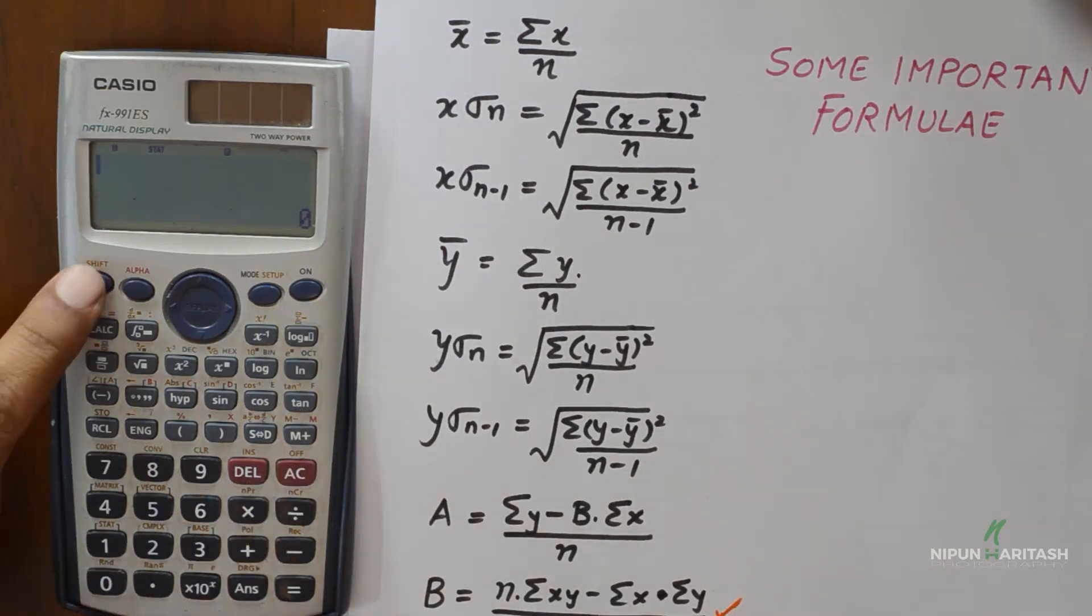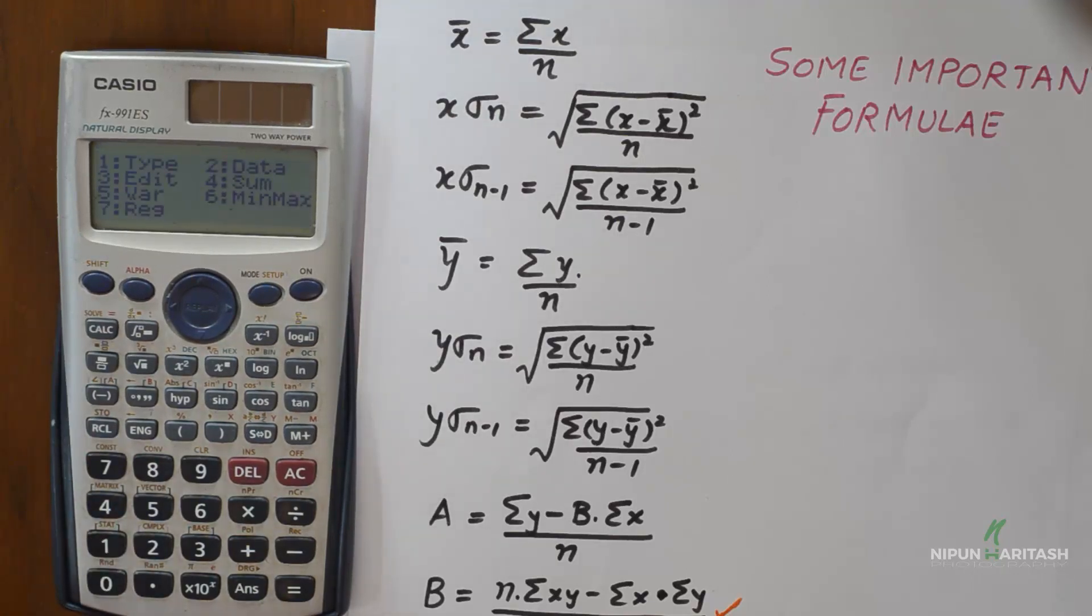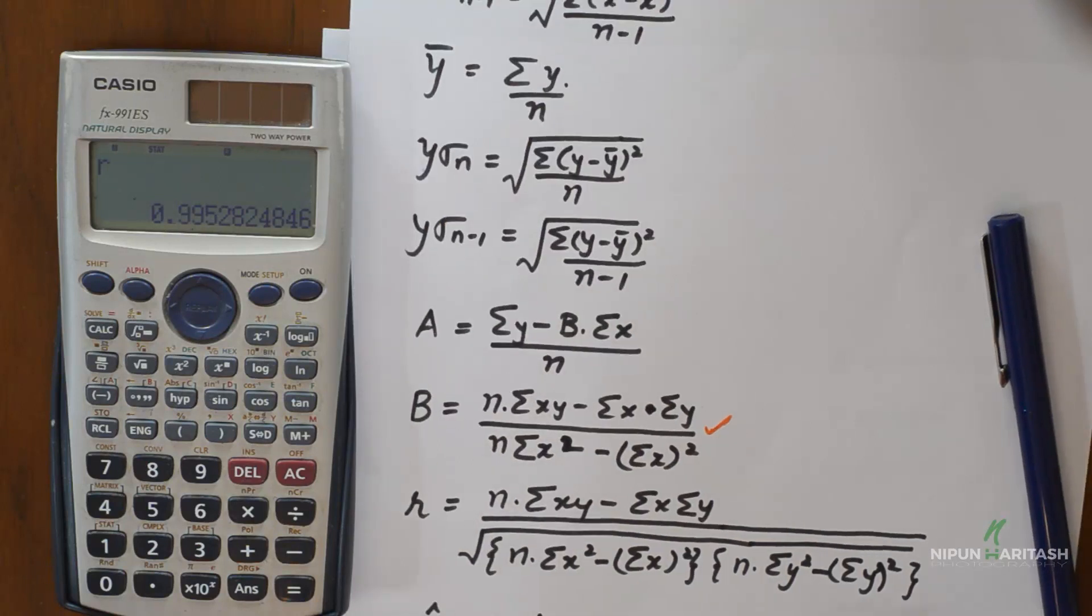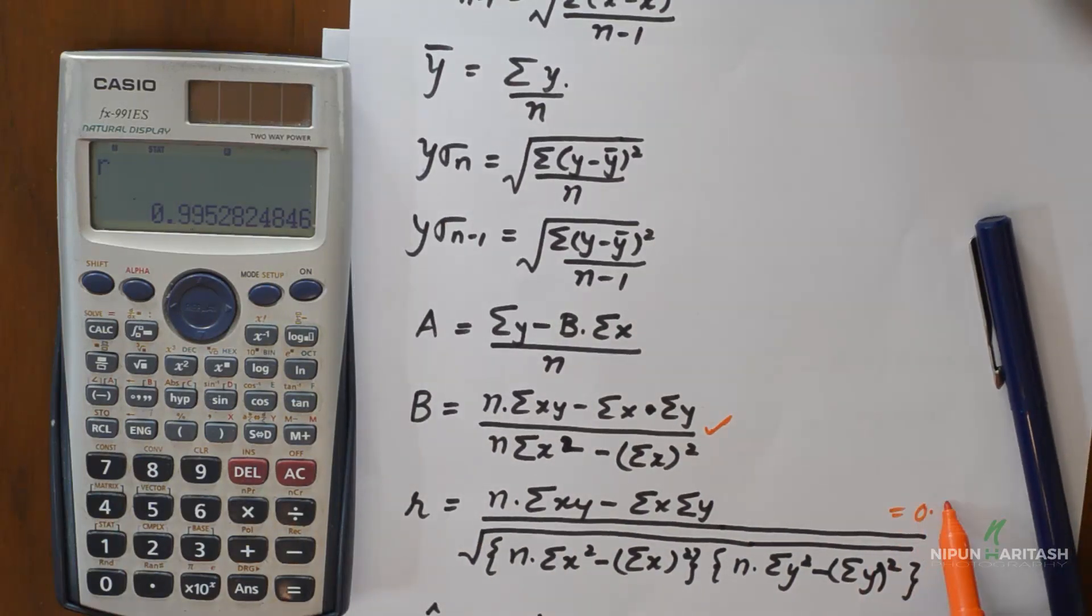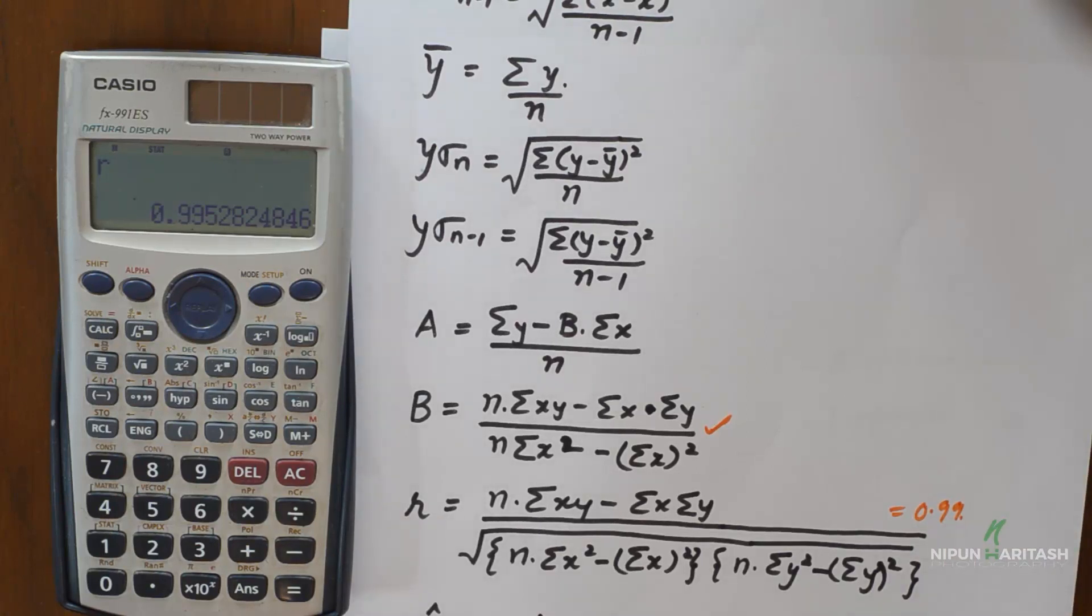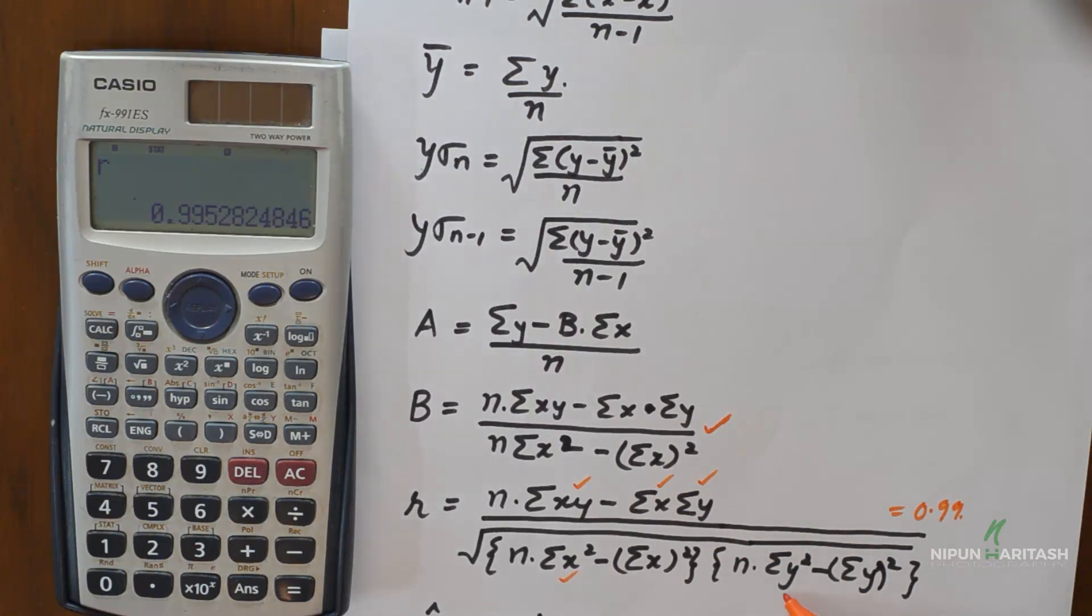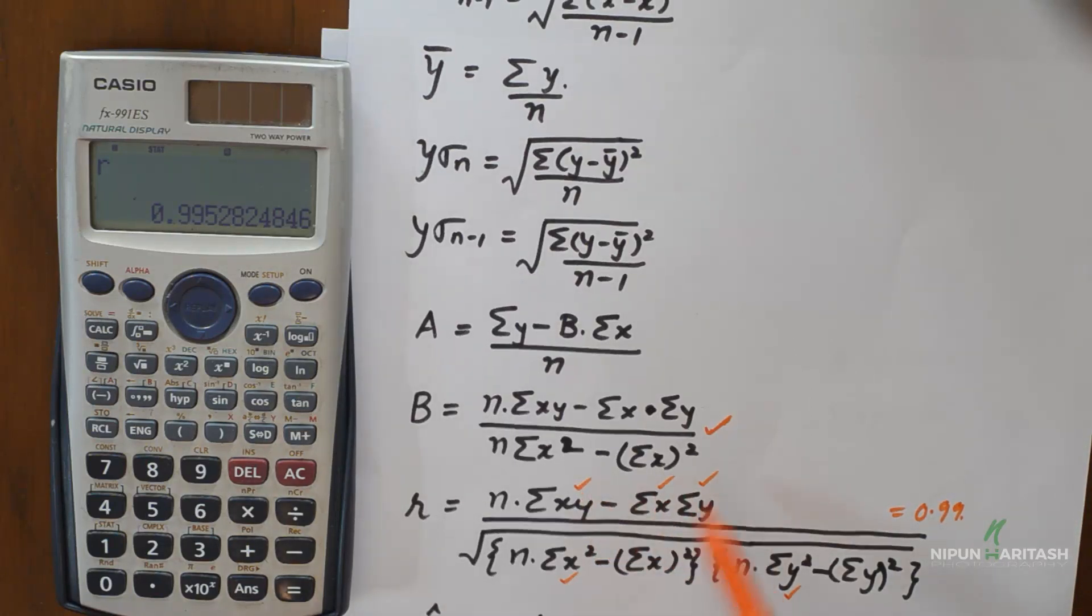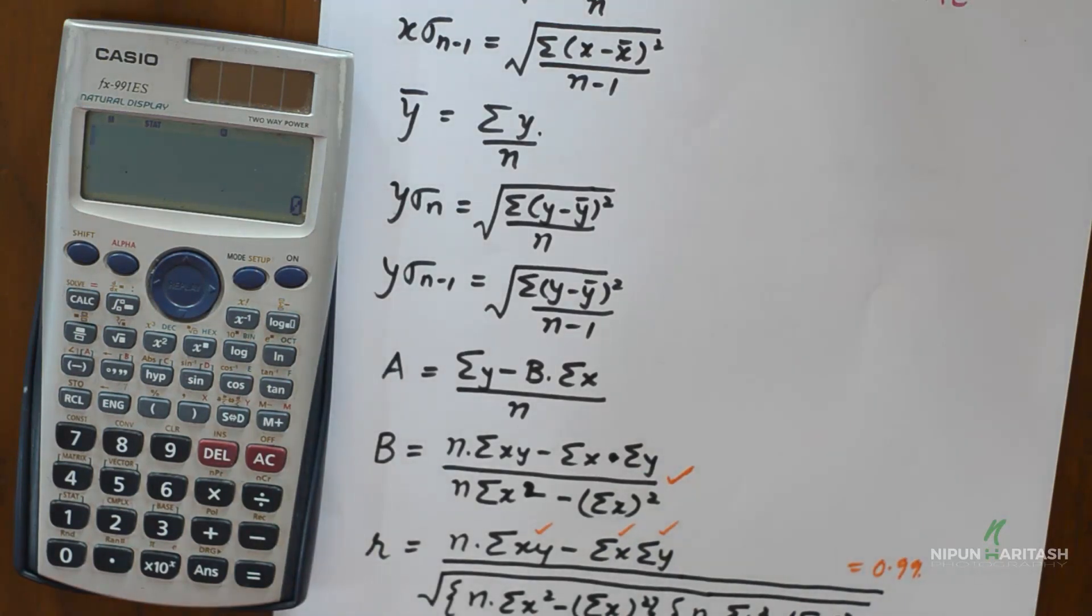Now I can clear this. I can go back to shift 1. I can select 7 again and I can press 3 to select the coefficient of regression. Press equal which is 0.99. Now as you can see R is equal to 0.99 for this set of data and if you do it manually you would need to calculate summation of x, y, summation of x, summation of y, summation of x square and summation of y square. So we would need to manually calculate 1, 2, 3. Alright you can see calculator saves a lot of manual effort here.